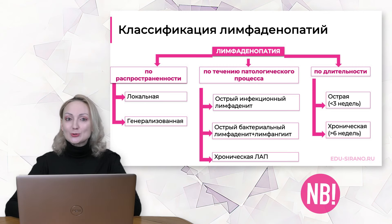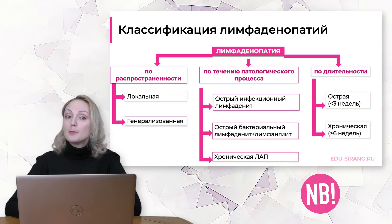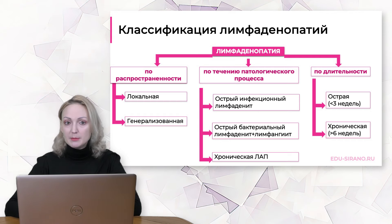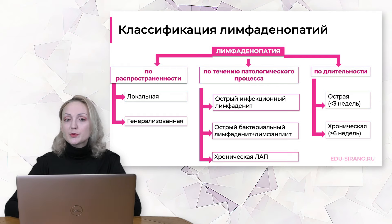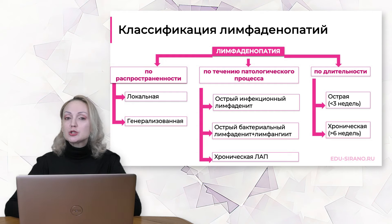Конечно, возникает вопрос: что происходит между третьей и шестой неделей с увеличением лимфатических узлов? Ряд авторов обозначает этот период как подострая лимфаденопатия. В этот период, наблюдая пациента, можно видеть, что в первые три недели лимфатические узлы начинают регрессировать, как это бывает при инфекционном мононуклеозе. Однако, к сожалению, бывают ситуации, когда пациенты приходят с увеличением лимфатических узлов уже два или три месяца, и тогда это уже хроническая лимфаденопатия.